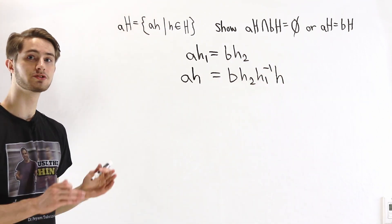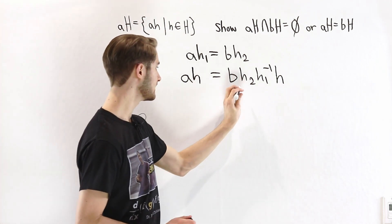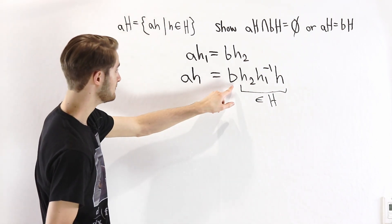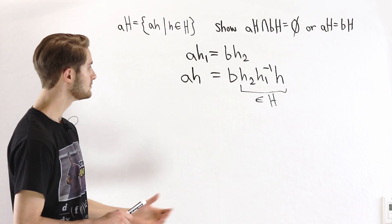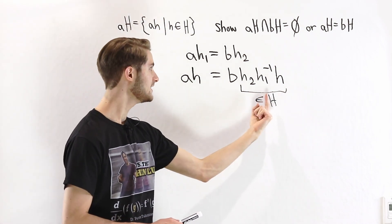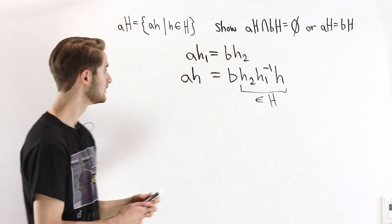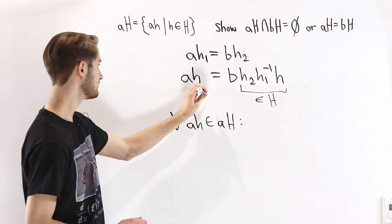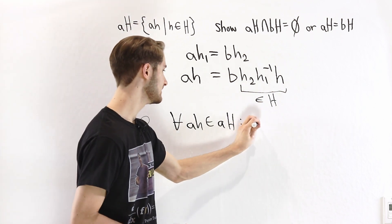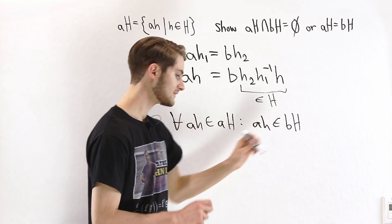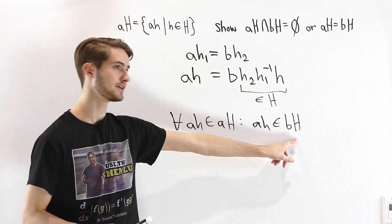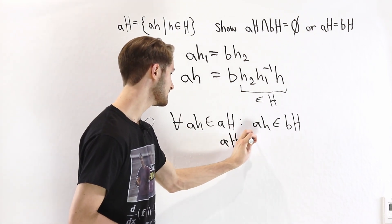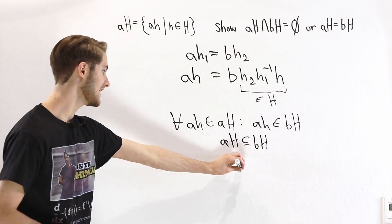But H is a subgroup, which means it's closed under multiplication. So H2H1 inverse times h is an element of the subgroup. This is of the form bh for some h in H, which means this entire thing — b times h — is going to be in the coset bH. So for every element aH in our first coset, we also have that this exact same element is in bH. Every element of the first coset is also in the second coset, and therefore aH must be a subset of bH, because bH contains everything in aH.